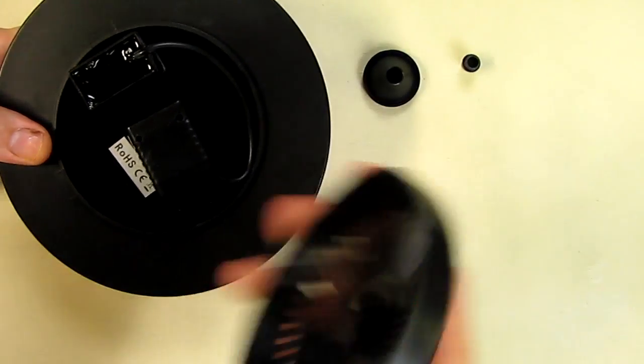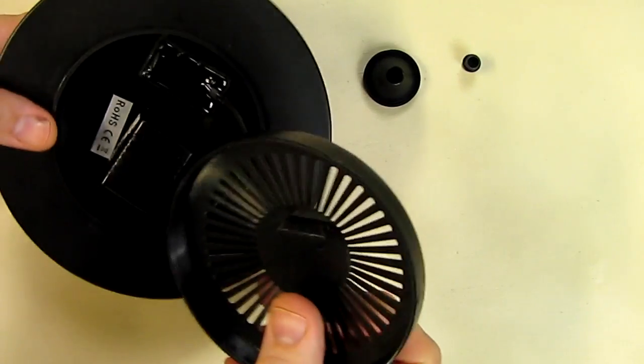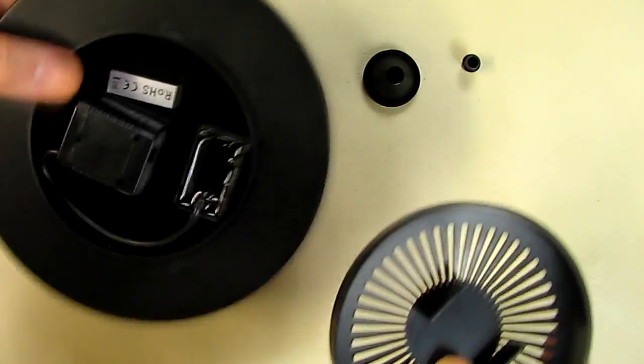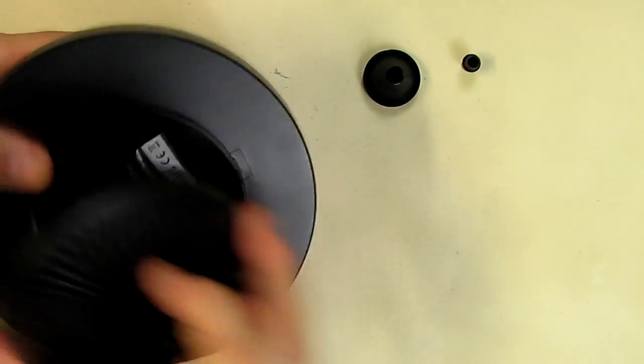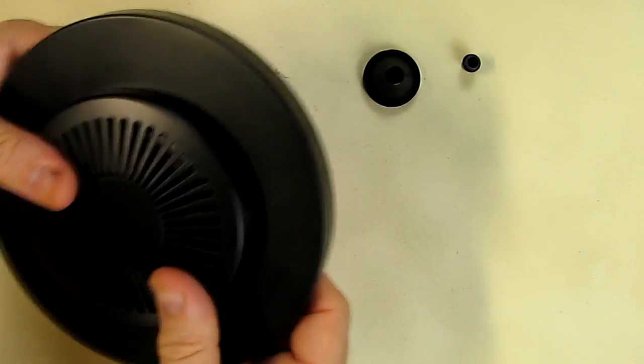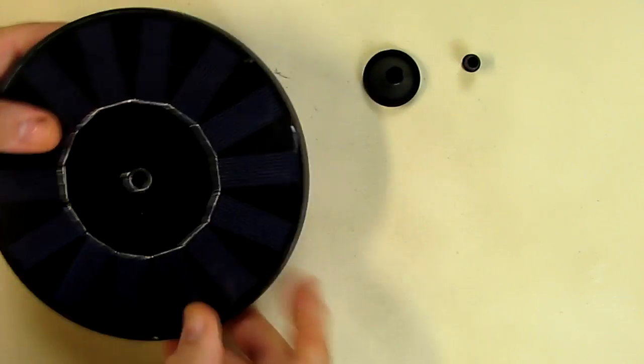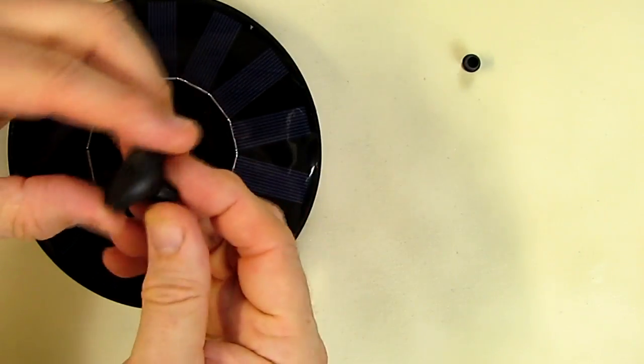And then you have this filter strainer, and it has two notches on there. Those notches line up with that pump, and then the whole thing snaps together quite nicely. And then you have the pump sprayer head.